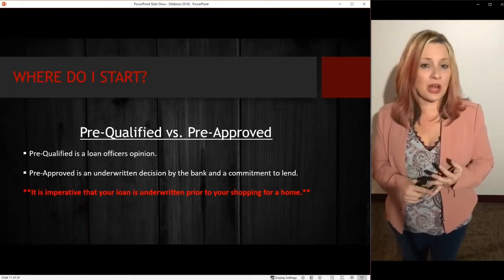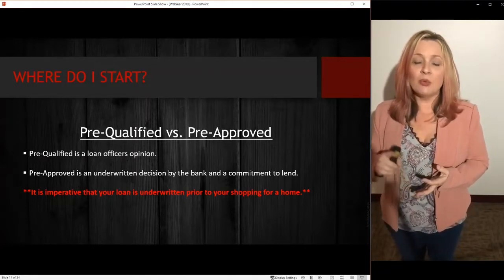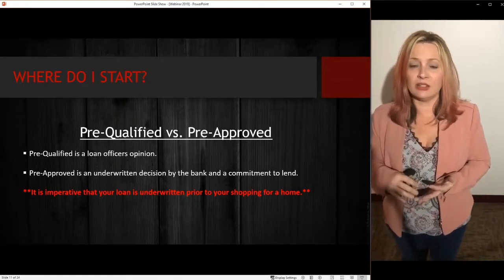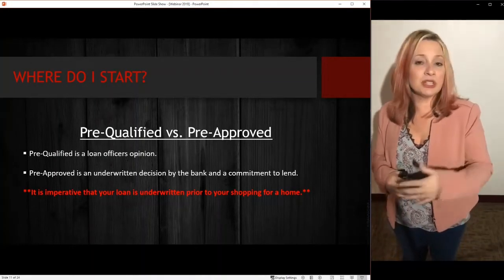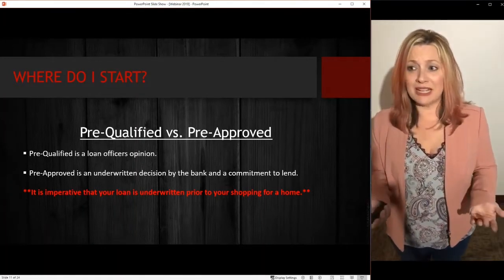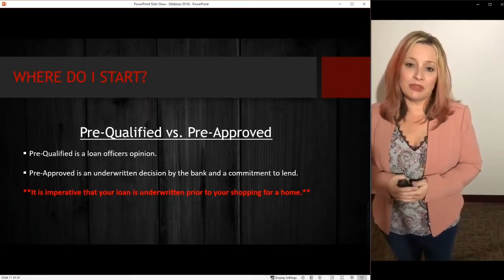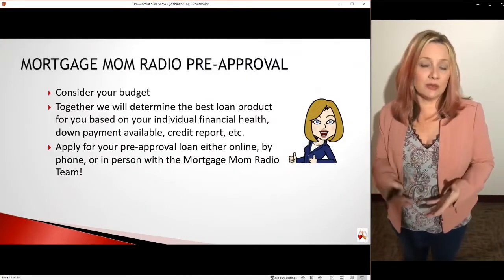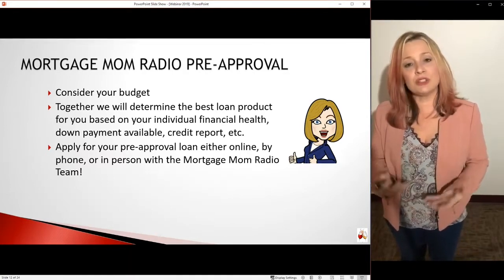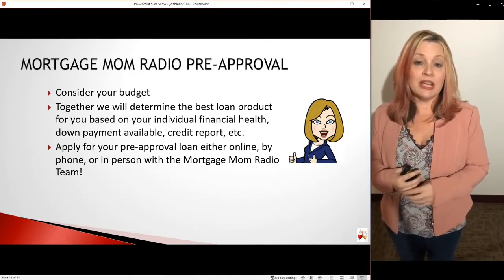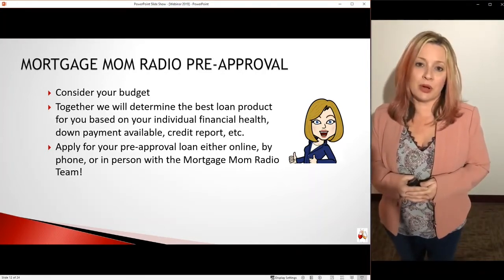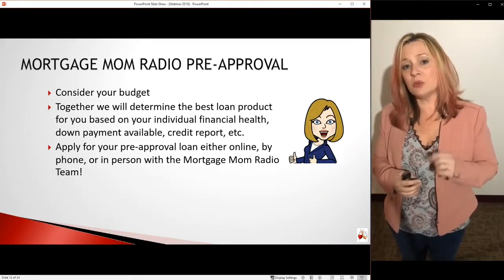Through the pre-approval process, we're going to look at your credit, your available down payment, and your monthly income to help determine the best loan program for you. Is FHA right? Is conventional right? Is USDA right? Maybe you're self-employed and need bank statements — that's okay. We can look at what options you have, whether you qualify for down payment assistance, whether you need to put money down, or if we need to do some credit repair. Whatever you need, we can tell you once we get that pre-approval started.